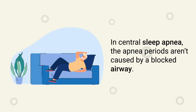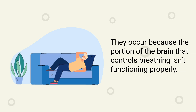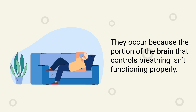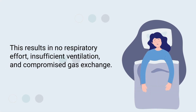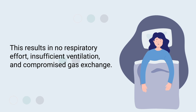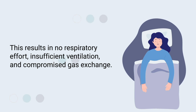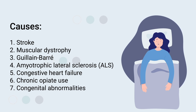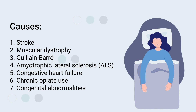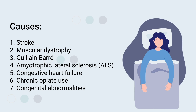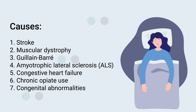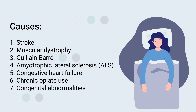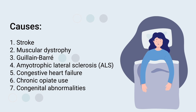In central sleep apnea, the apnea periods aren't caused by a blocked airway — they occur because the portion of the brain that controls breathing isn't functioning properly. This results in no respiratory effort, insufficient ventilation, and compromised gas exchange. Common causes include stroke, muscular dystrophy, Guillain-Barré syndrome, ALS, congestive heart failure, chronic opiate use, and congenital abnormalities.